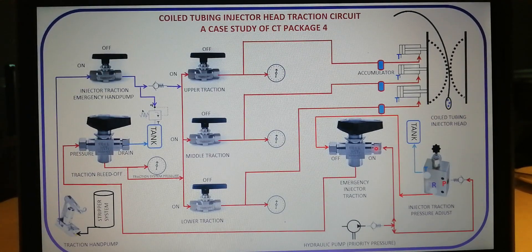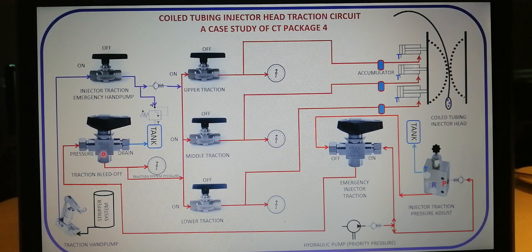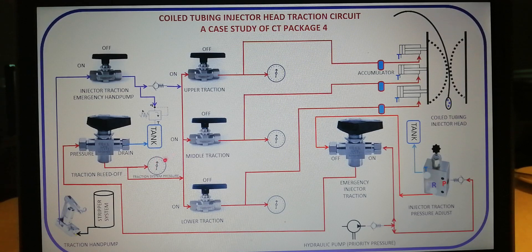Keeping this valve in the off position implies you have completely isolated the on port. This flow of hydraulic comes out from the bottom port down to the pressure port of the traction bleed-off valve. Since this valve is in the pressure position, there will be communication between this pressure port and the bottom port, which also implies that you have completely isolated the drain port.